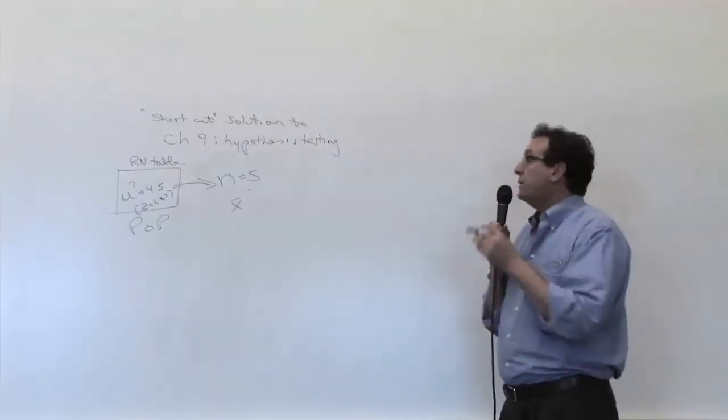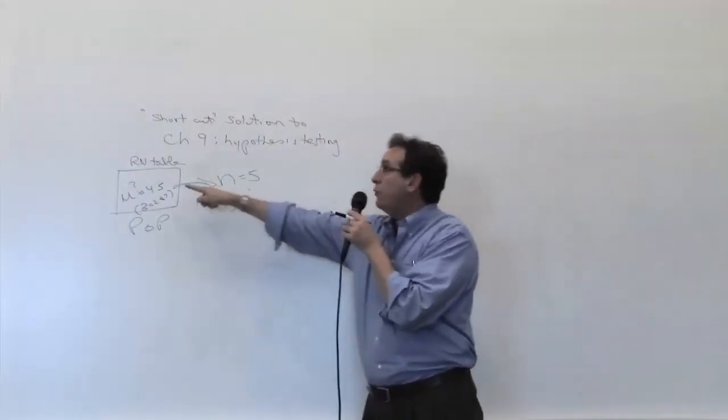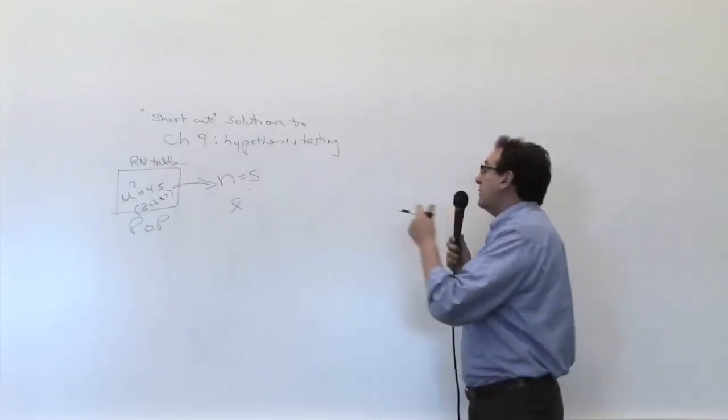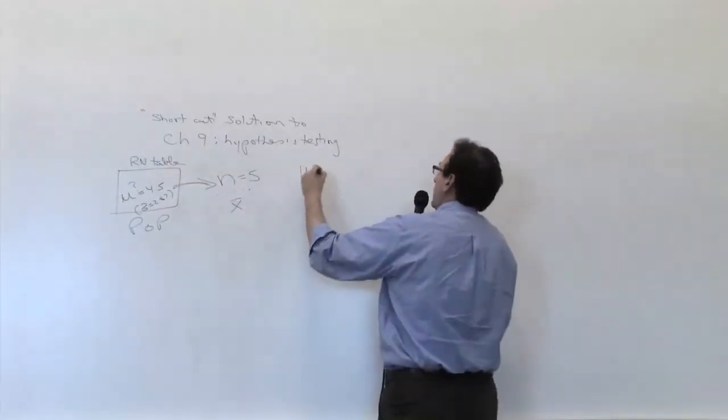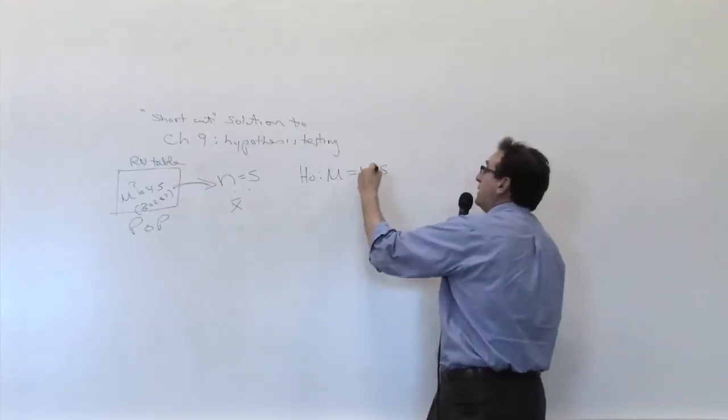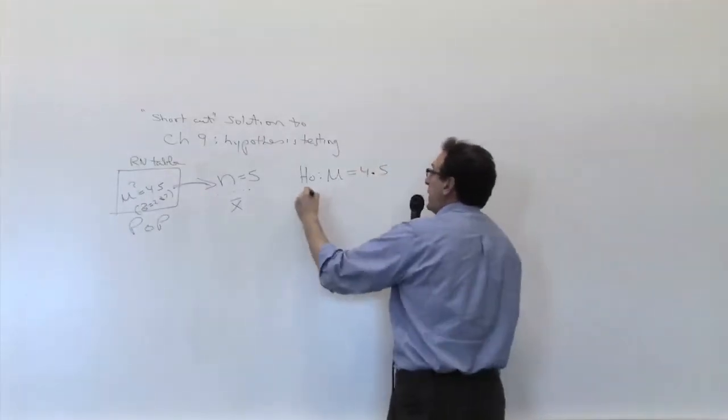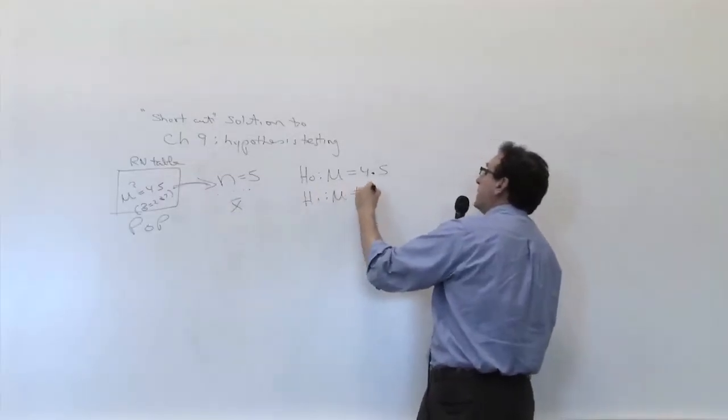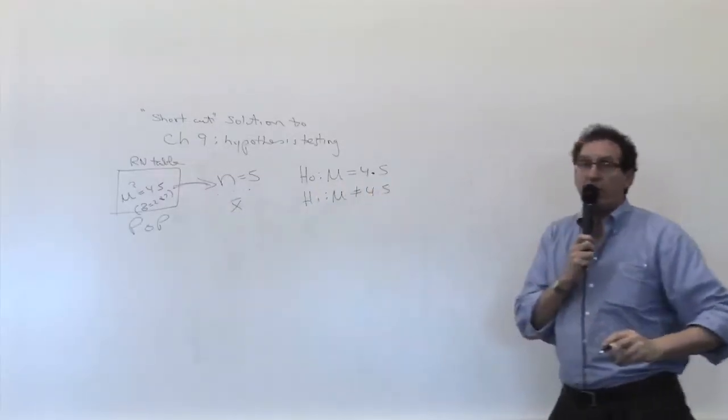And the next logical thing to do is to say if the average is close to 4.5, we're going to accept the H0, which of course is mu is truly 4.5. We give the benefit of the doubt to the H0 because it represents the status quo. And H1 is that the average of table really is messed up. It has an average different than 4.5.